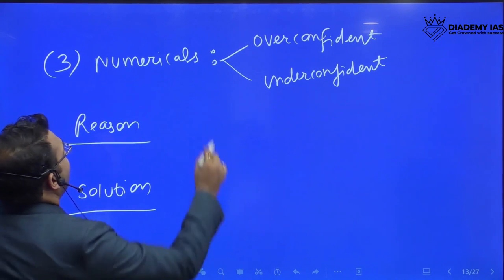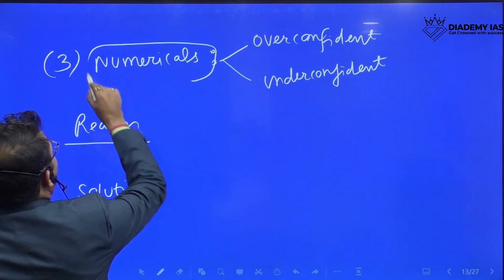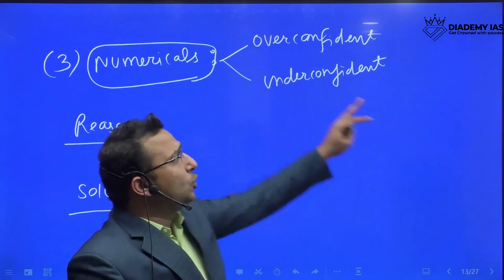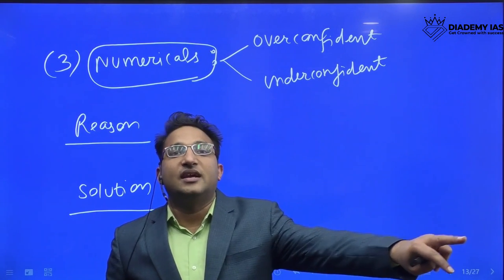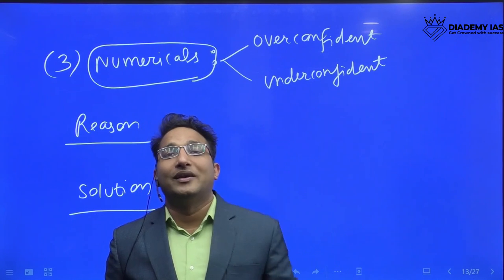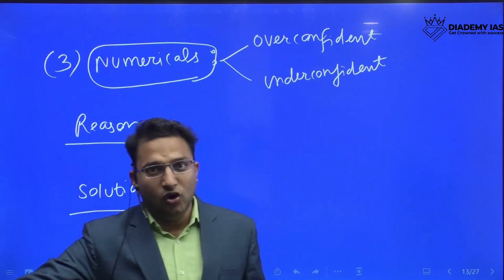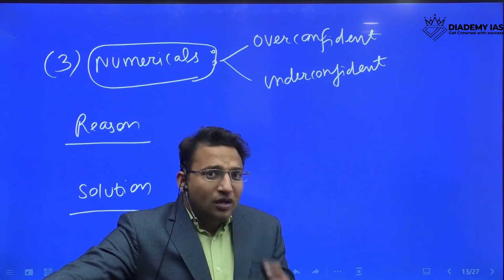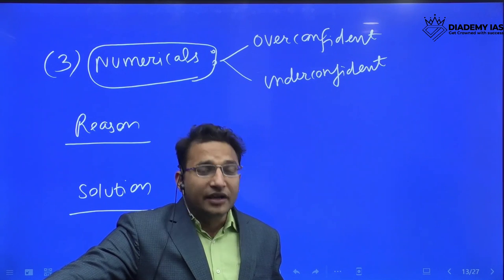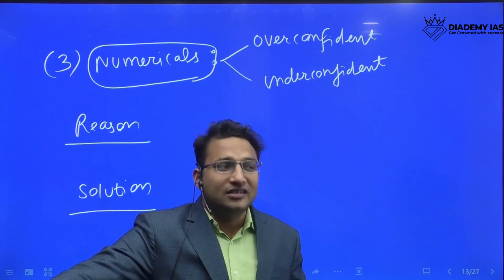The third mistake which people are doing is the numerical. In numericals, there is a segment of people who are overconfident, especially from CA background or those who are good in numericals in the BCOM degree. The problem with them is they take it for granted.